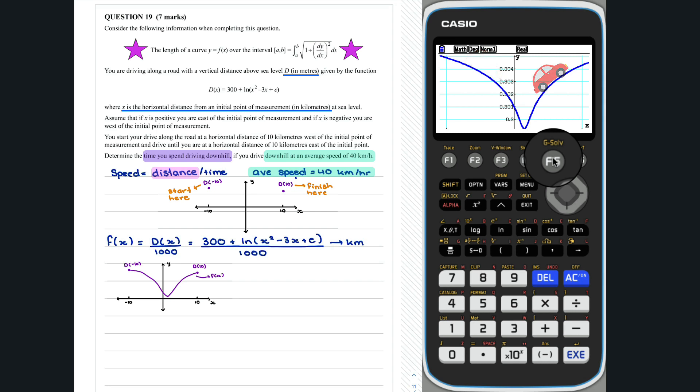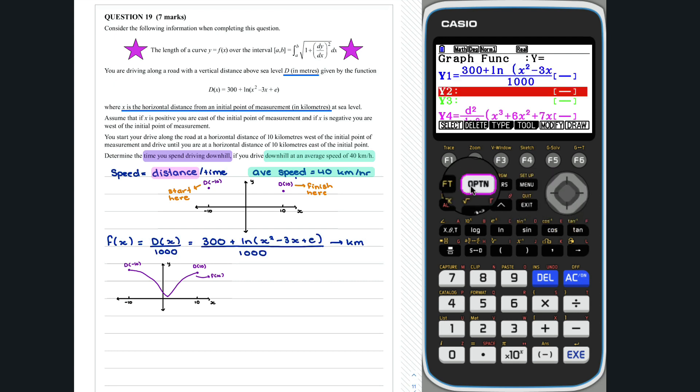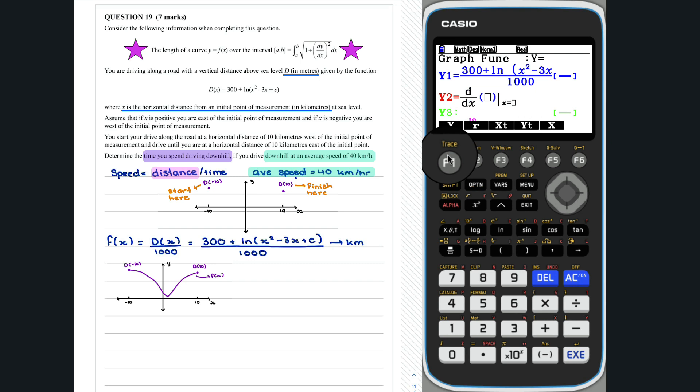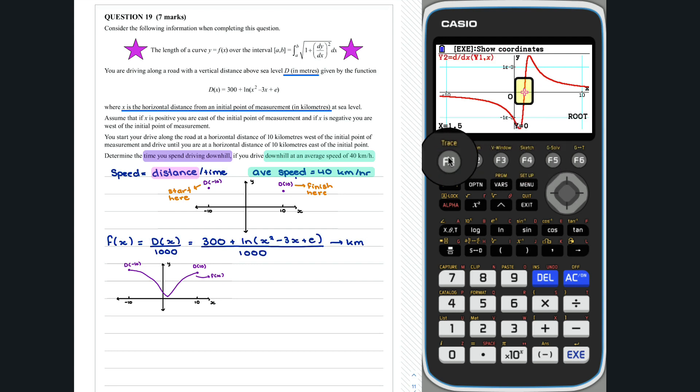We need to determine where f of x goes from decreasing to increasing. To do this, we will look for where the derivative of f of x goes from negative to positive as follows. Right, so we have a negative slope until x is equal to 1.5. Thus, we can see that we drive downhill from x equals negative 10 to x equals 1.5.